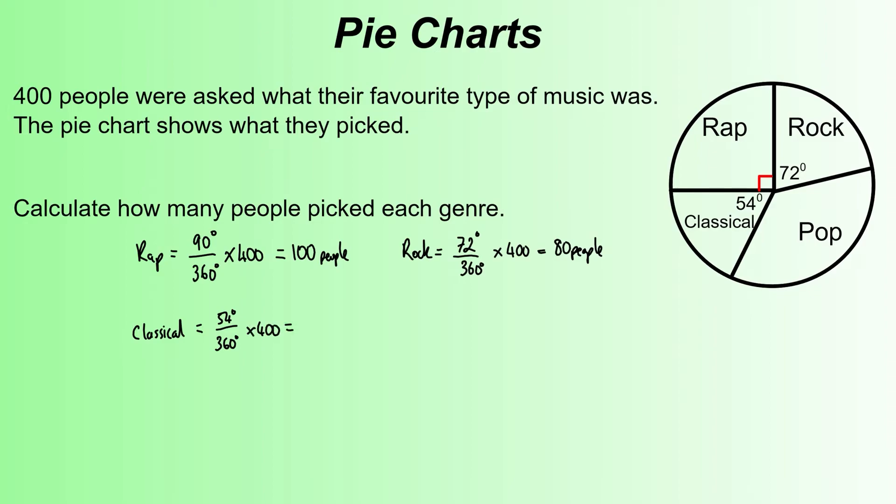Finally, we've got pop. Pop is the biggest section but it's not actually given as the angle for that. To calculate that angle we're going to do 360 degrees for the full pie chart minus all the other angles - minus the 54, minus the 90, and minus the 72 - and that gives you 144 degrees for that section there. So our fraction would be 144 degrees out of 360 degrees times the 400, and if you type that into the calculator, that gives you 160 people.